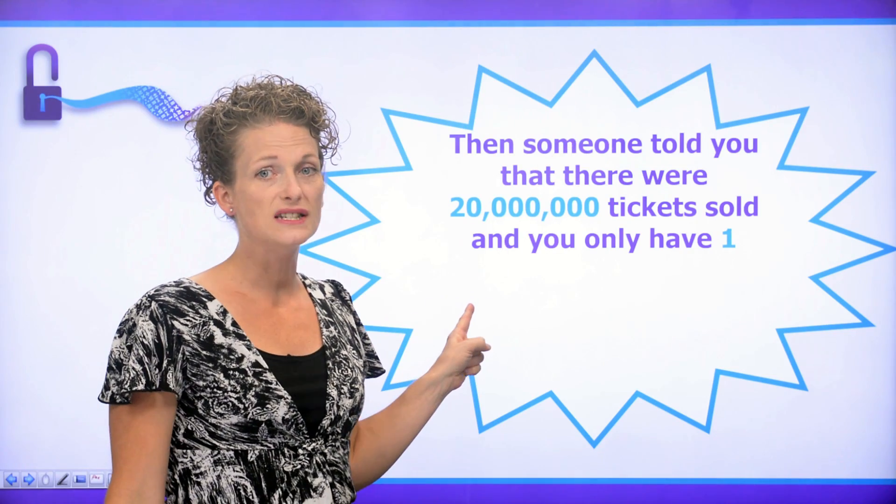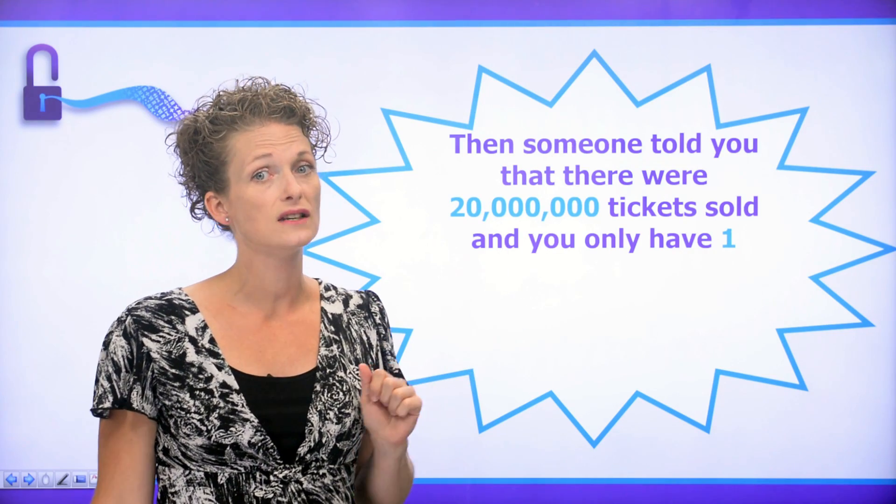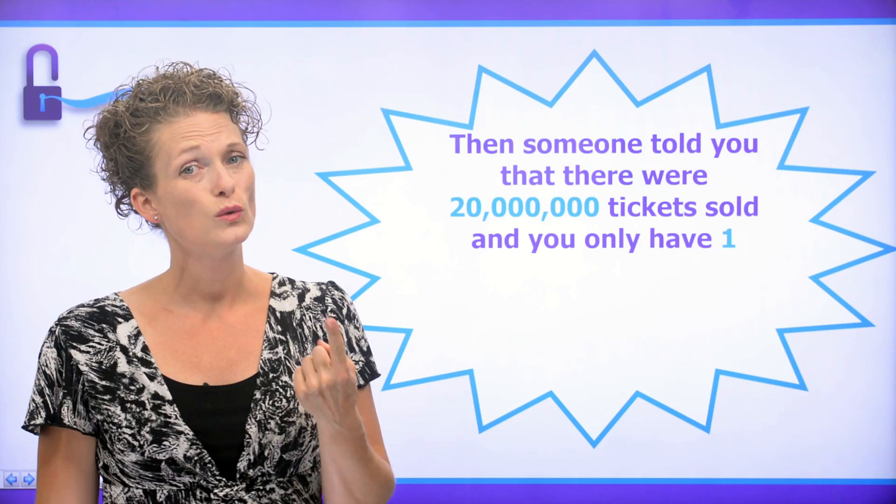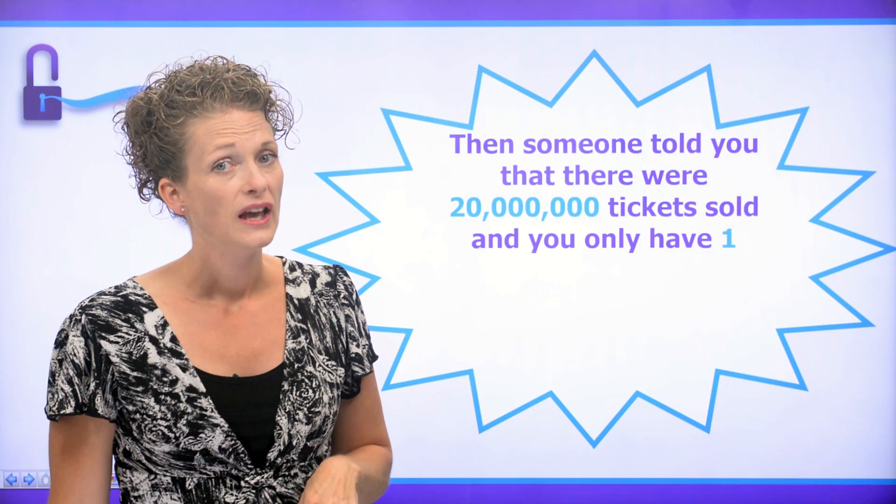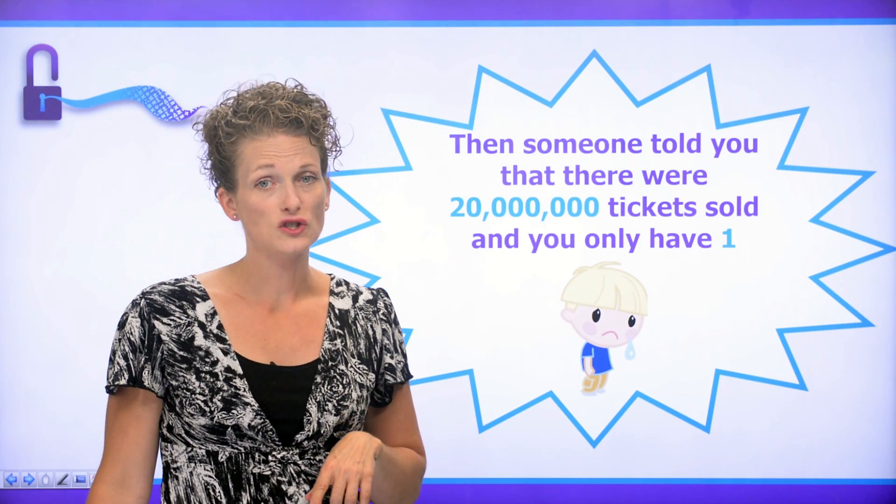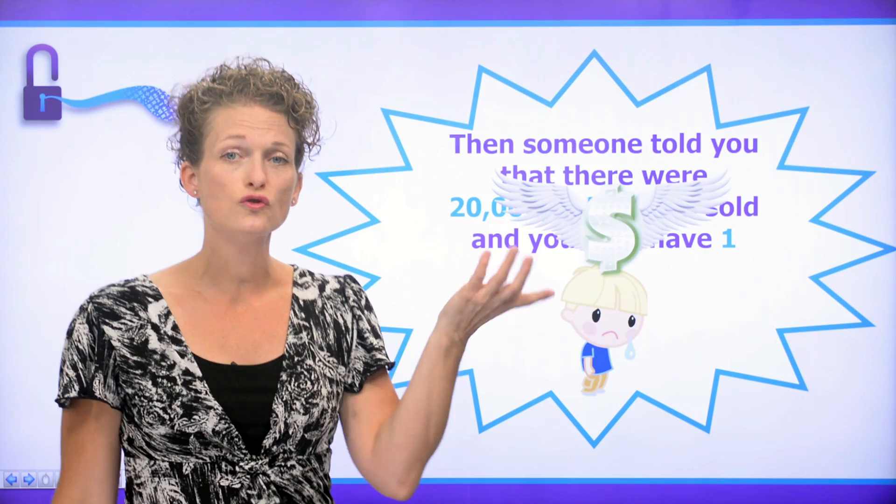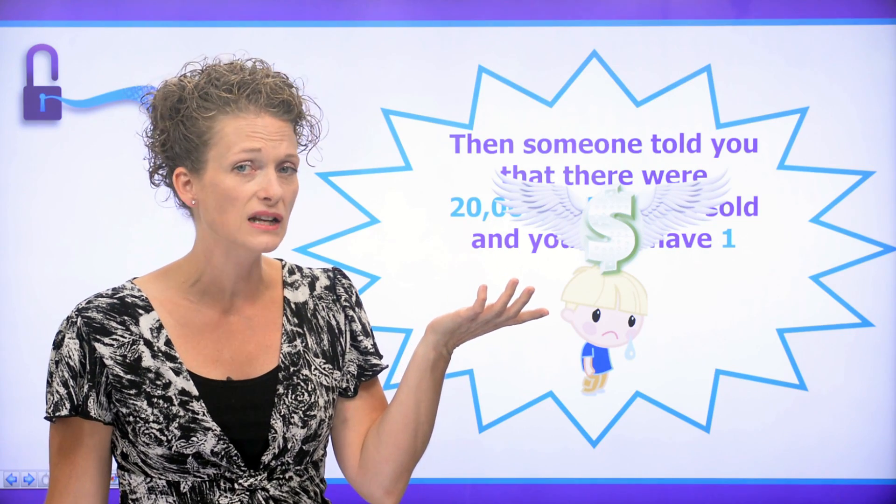And then somebody tells you, there were 20 million tickets sold and you only have won. And you and Unlock Math Monster start to cry because your dreams of all of that money that you might win have begun to fly away.